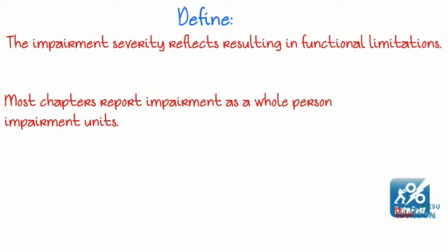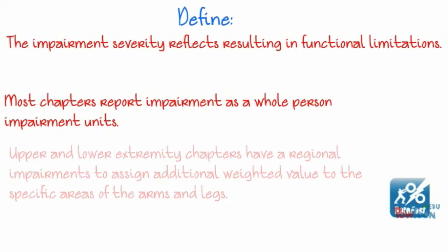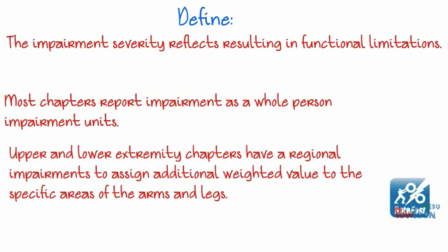Upper and lower extremity chapters are a little different and have regional impairments, which are used to assign additional weighted values to specific areas of the arms and legs, such as the wrist, the thumbs, and the fingers relative to the elbow and shoulder.